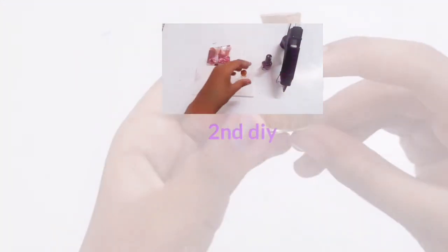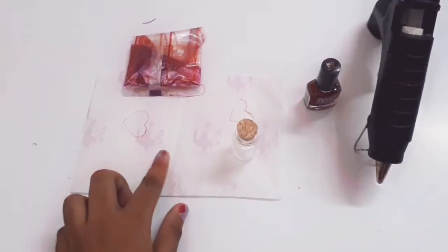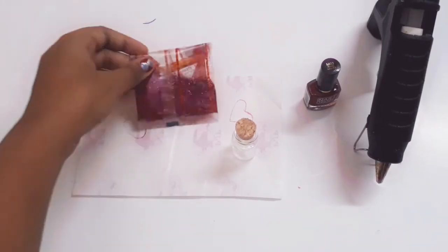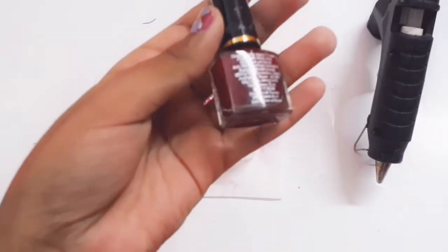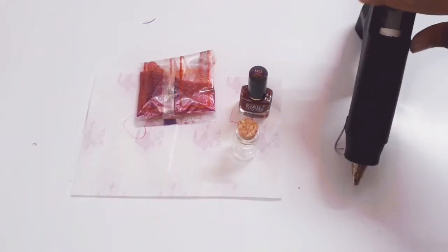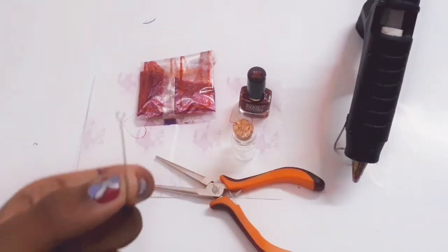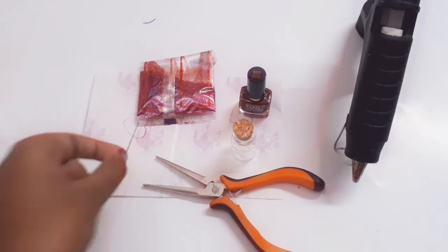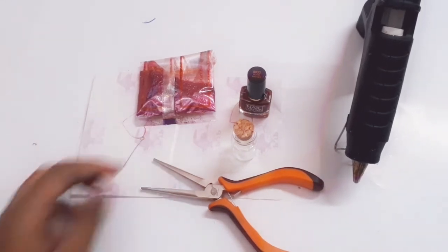Now let's move on to the second DIY. For the second DIY, you'll need a bottle, wax sheet, glitter, nail polish, glue gun, eye pin, and pliers. So let's get started.